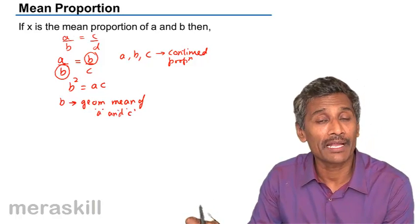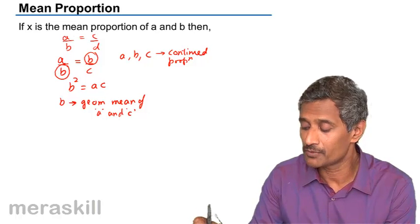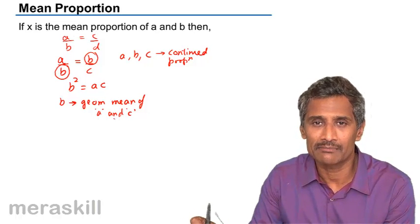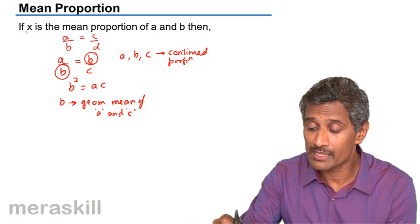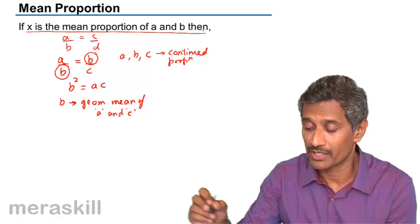In simple words, if we have to find the geometric mean of two terms, simply multiply them and find the square root. So, in simple words, suppose this particular example is what we have over here.